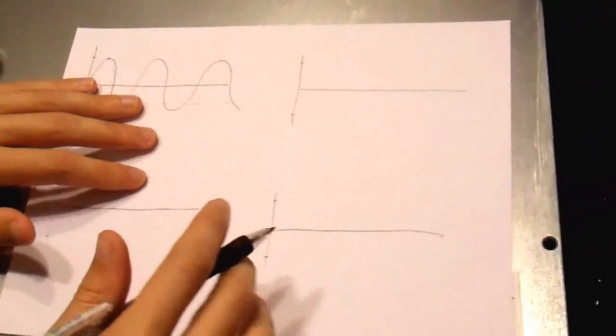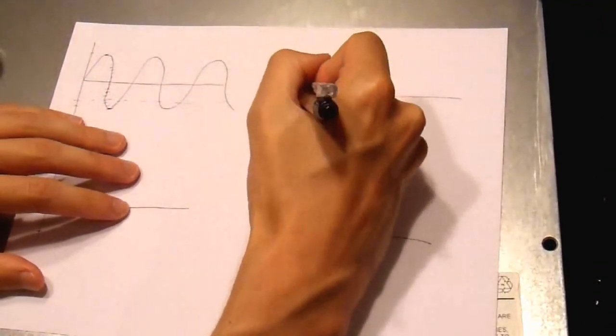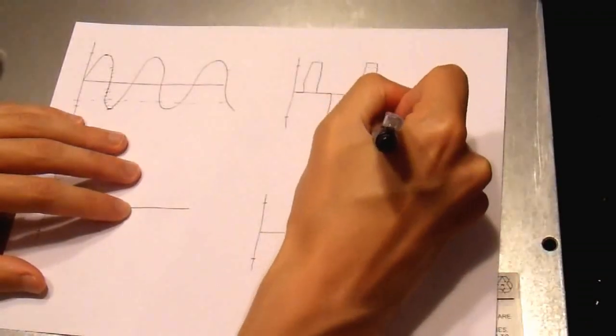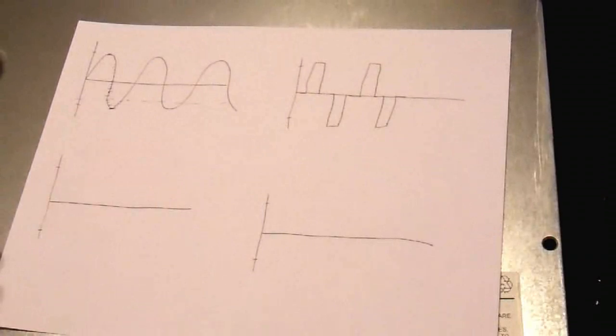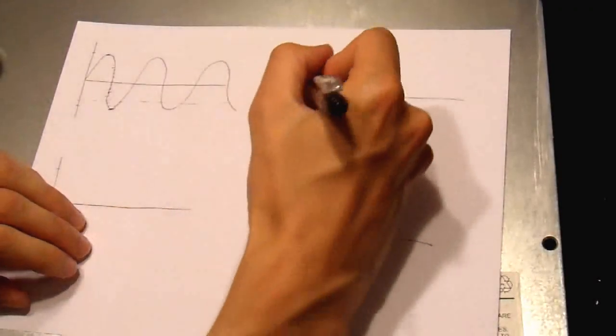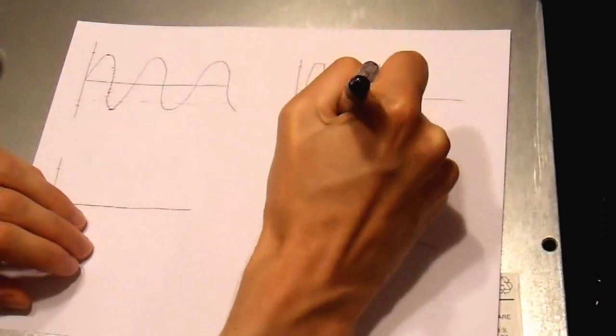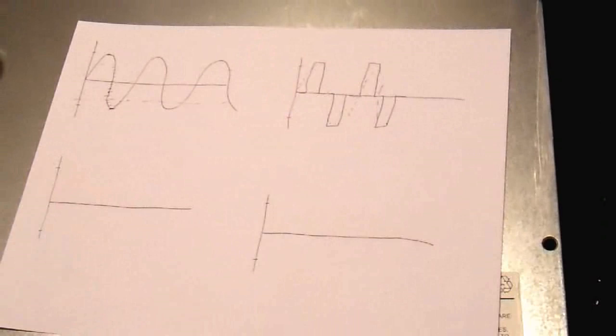So, the modified sine wave inverter produces a waveform that looks something like this. Something like that. And if you really use your imagination, you can kind of imagine what a sine wave would look like compared to this. And it's a very rough approximation to a sine wave.